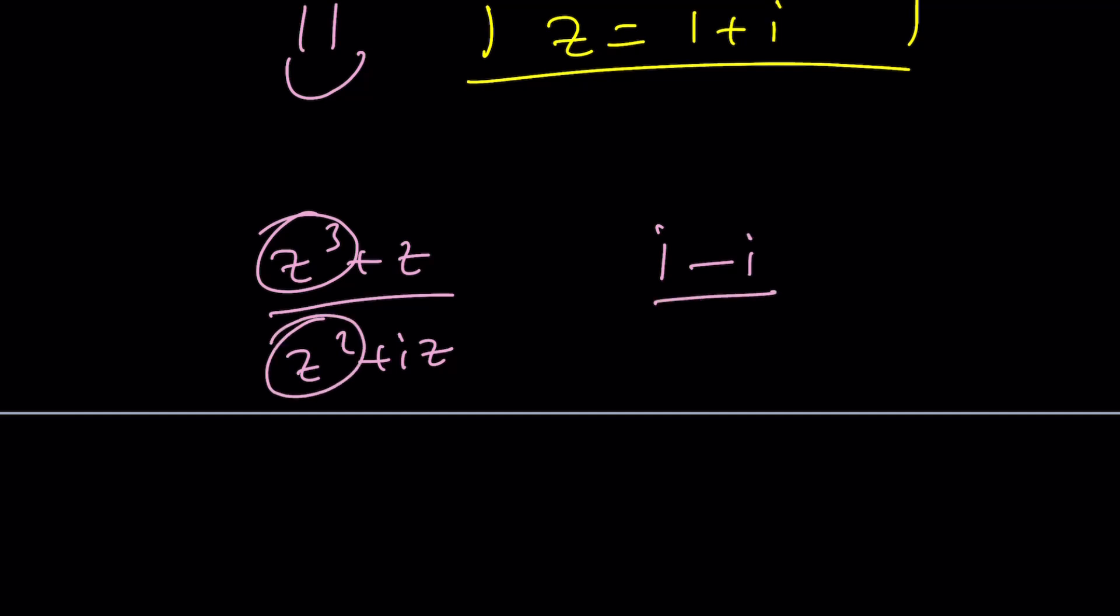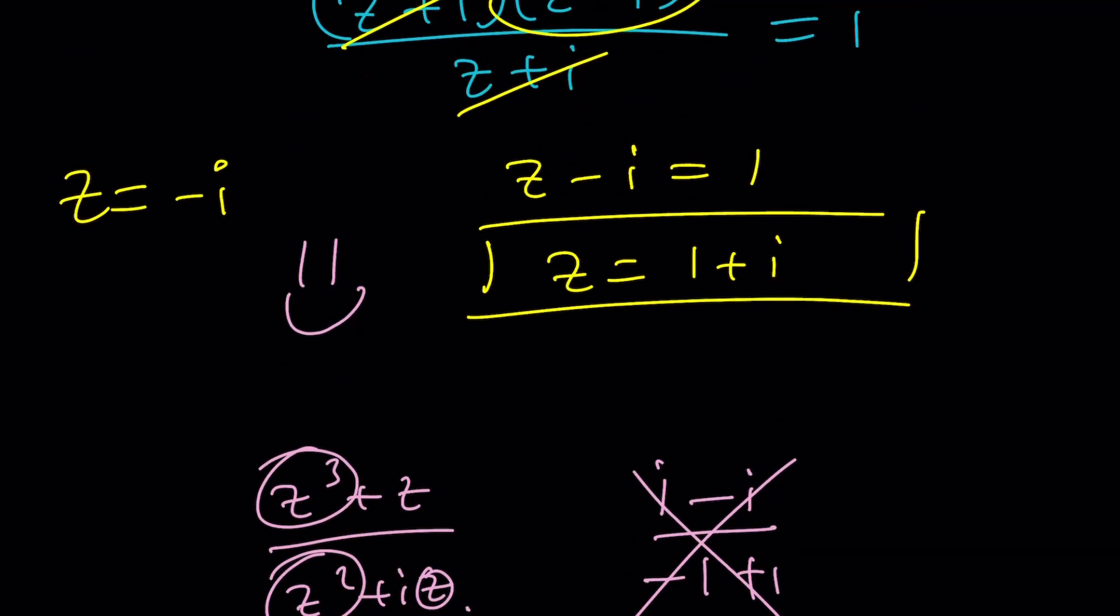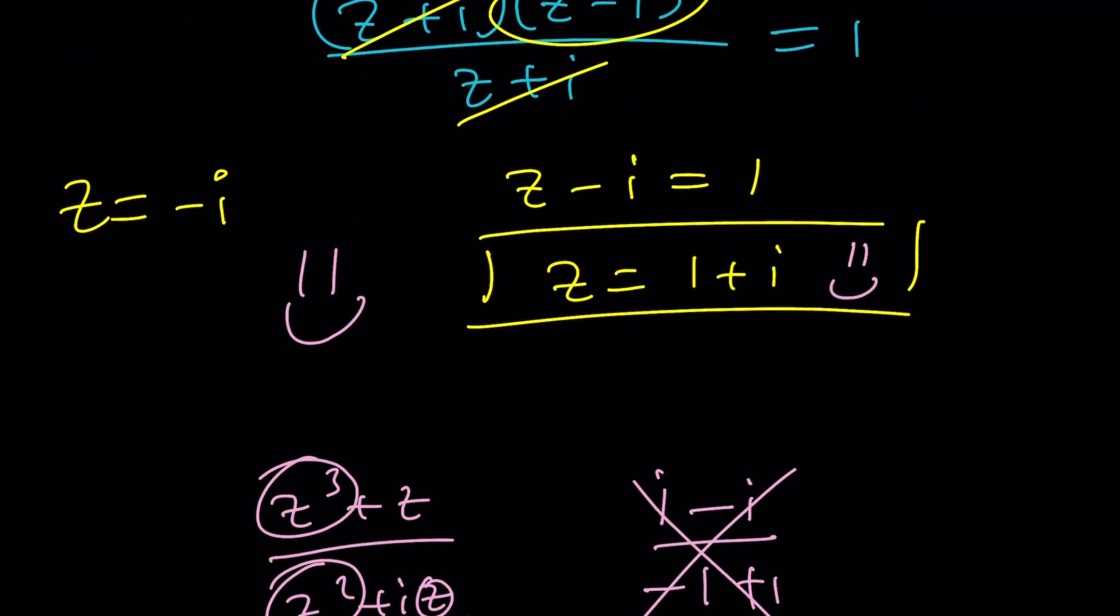Z squared is going to be negative 1. Z is going to be negative i. That's going to be negative i squared, which is positive 1, 0 over 0. Uh-oh. We're not going to accept it. So, the only solution, then, is z equals 1 plus i. The others are rejected.